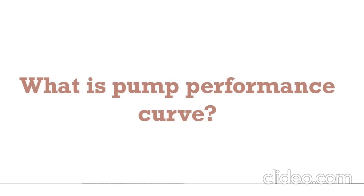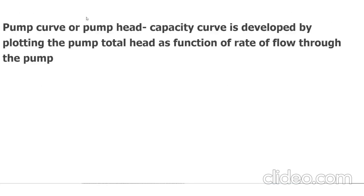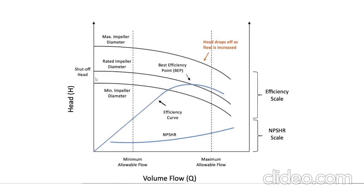Next is the pump performance curve. This can be a performance curve or head capacity characteristic curve. The pump curve is developed by plotting the pump total head as a function of the rate of flow through the pump. It's a relationship between the pump flow rate versus the total pump head produced.